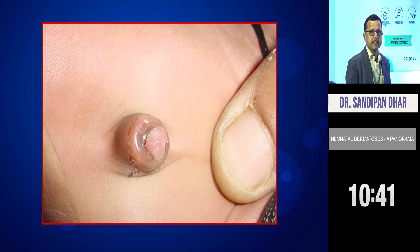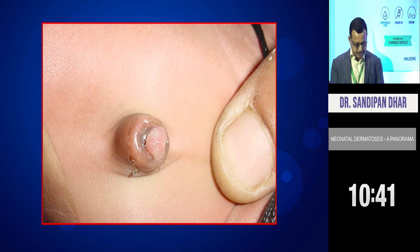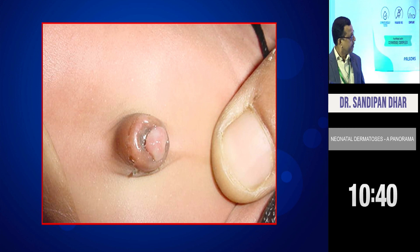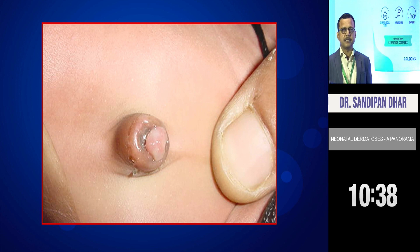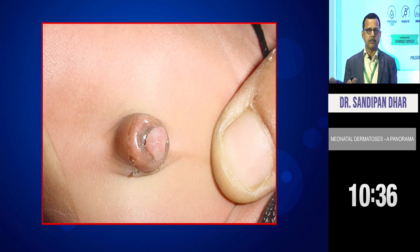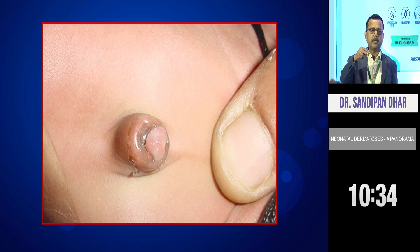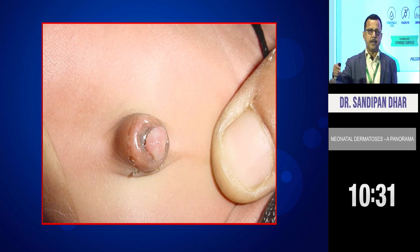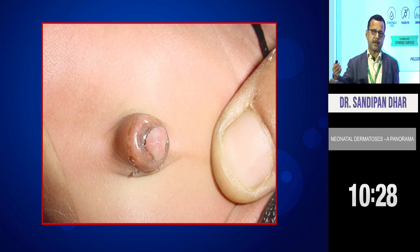This is umbilical granuloma, which is just like granuloma pyogenicum occurring in the umbilicus of the newborn — that is why we call it umbilical granuloma. Treatment is the same as granuloma pyogenicum: cauterization.